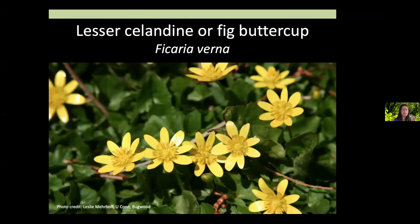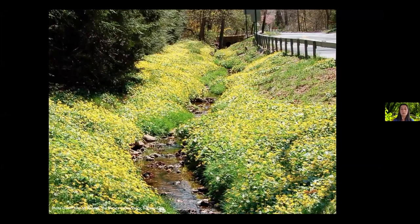Another herbaceous species I really see increasing is lesser celandine or fig buttercup. You can see why people like it — beautiful yellow buttercup flowers that pop up in early spring — and I've seen entire front yards taken over with it. Once it gets like this, it's really hard to control. It's a spring ephemeral, and below ground it has tiny little bulbs that will easily dislodge, making it impossible to pull up. Your management window is extremely narrow.